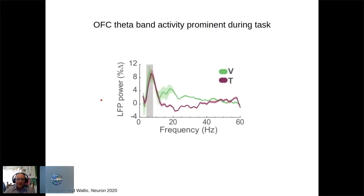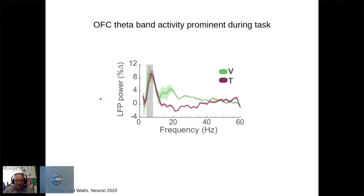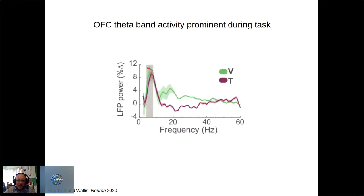So: what is the role of OFC theta in value learning and valuation? We record while animals perform the task, and the first thing we confirm is that there is prominent theta activity. Plotting LFP power normalized to the inter-trial interval during the fixation epoch, we see a prominent amount of activity in the 4–8 Hz theta band relative to all other bands up to 60 Hz.